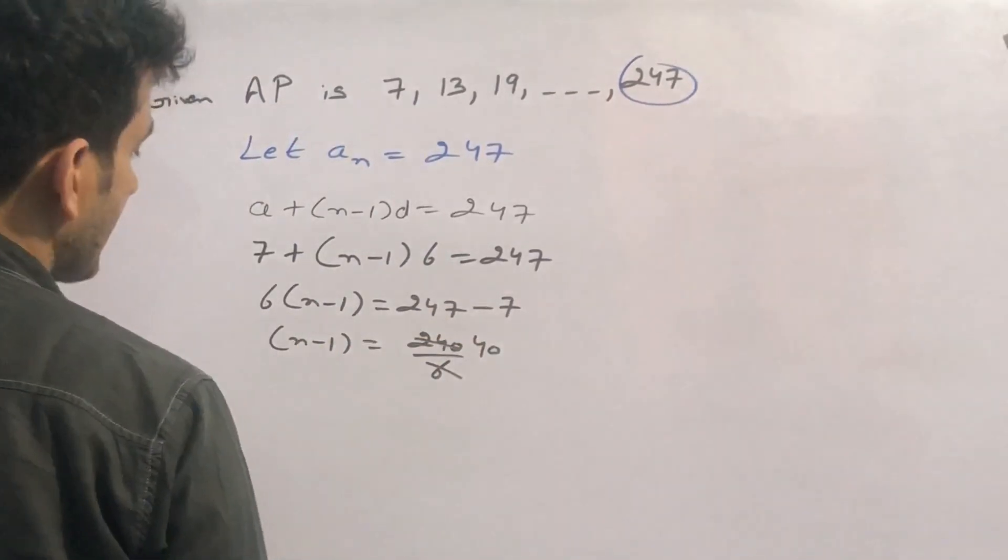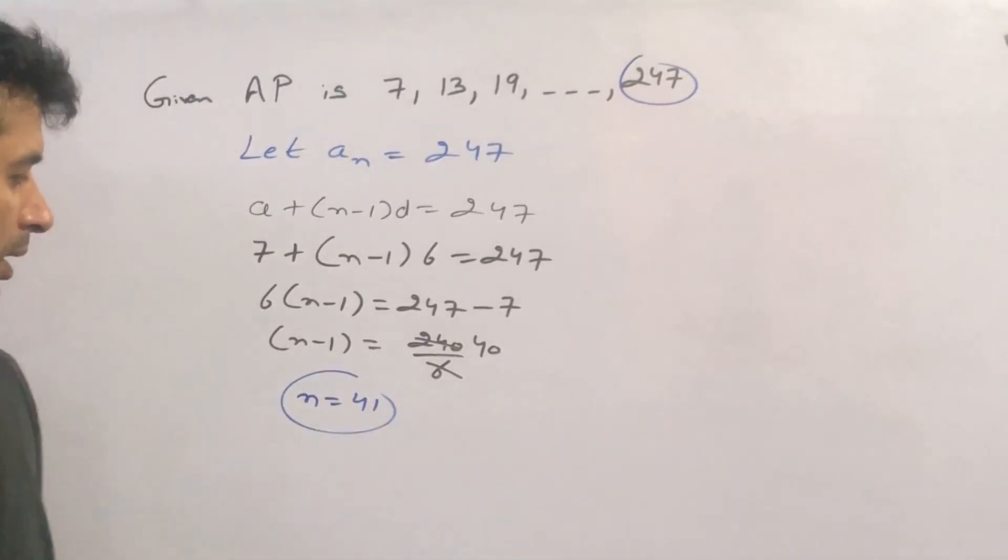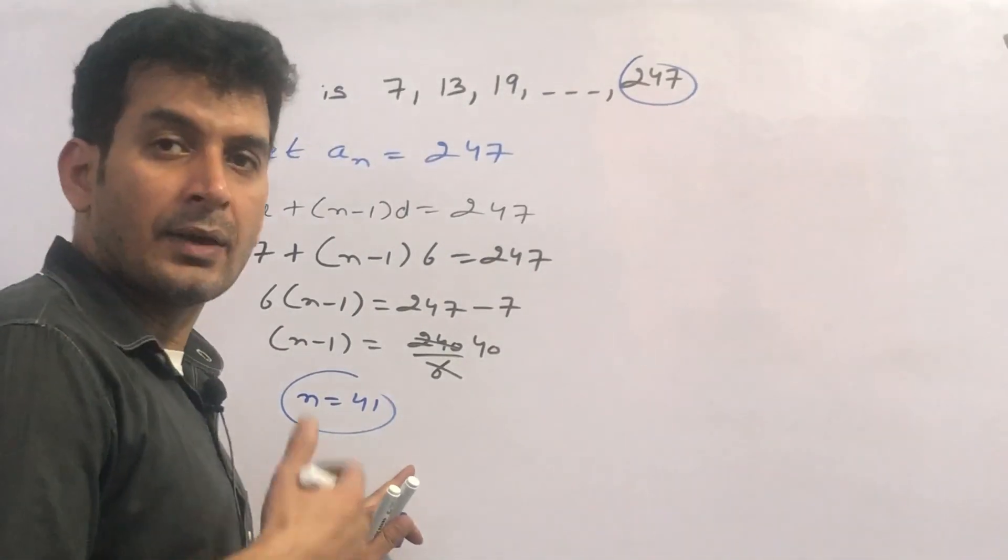So this becomes 40. Minus 1 when shifted to the right hand side, N's value will be 41. N is 41.